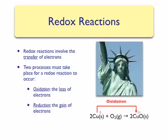The electrons lost by the copper were gained by the oxygen, causing it to go from having no charge on its atoms to having a minus two charge on the product side. This means that oxygen was reduced.